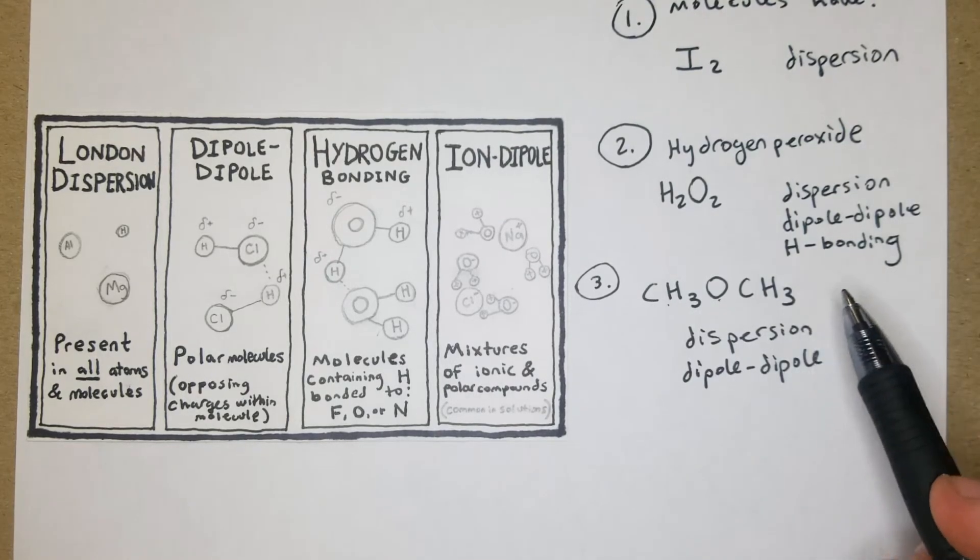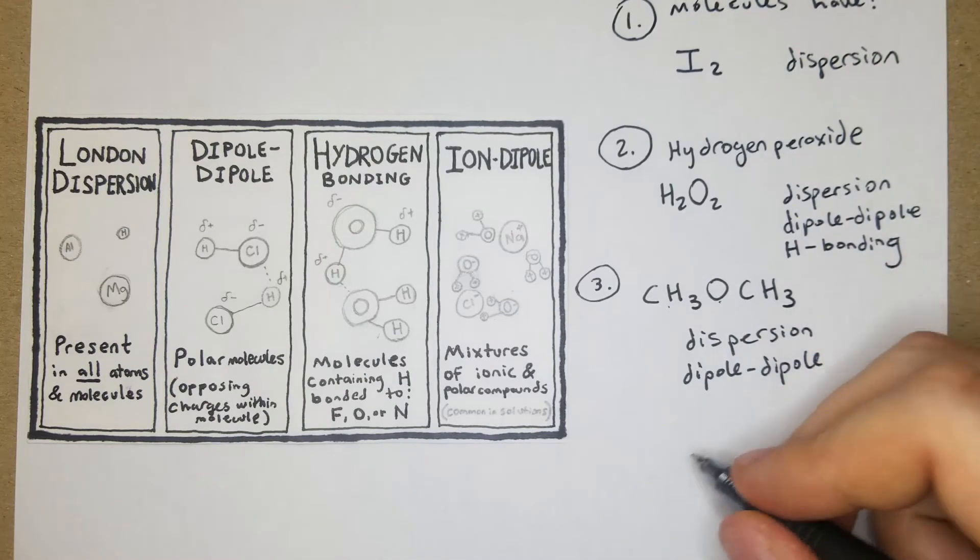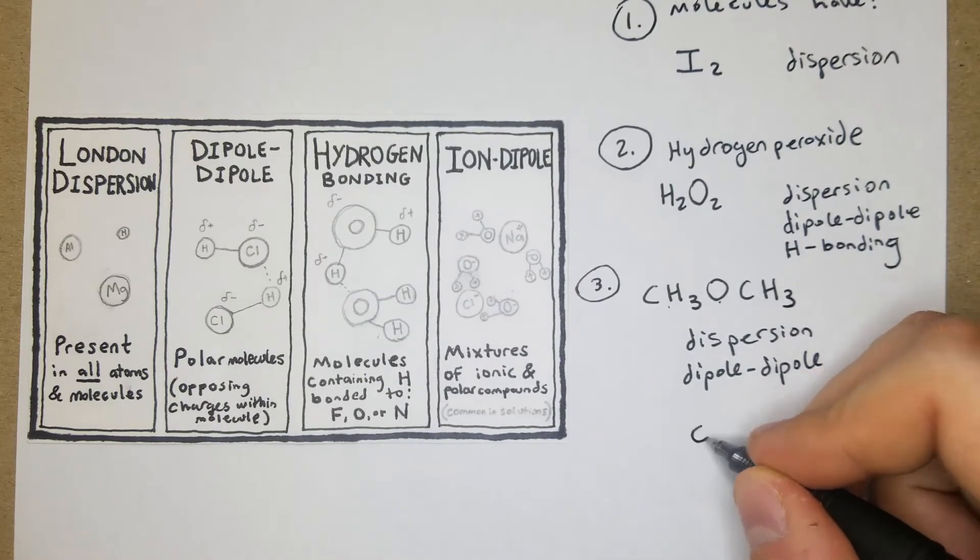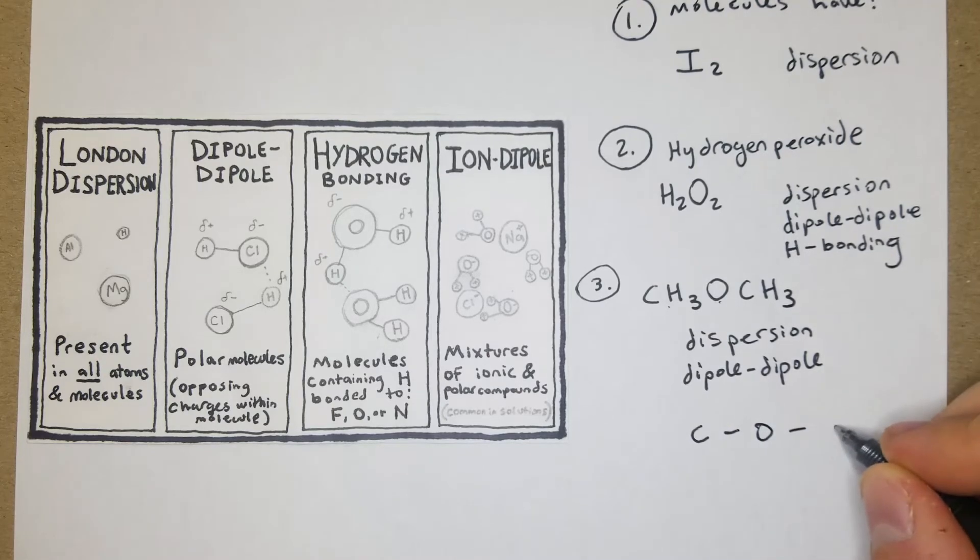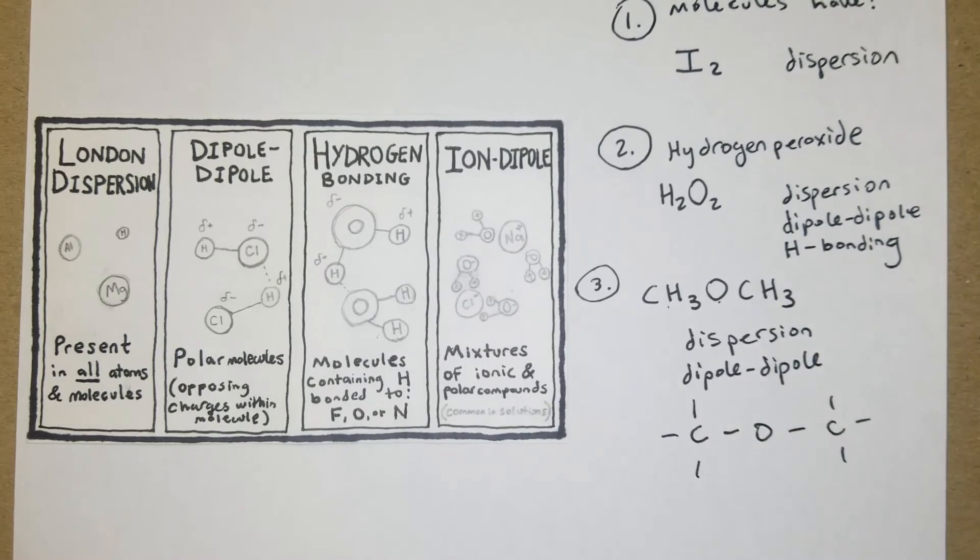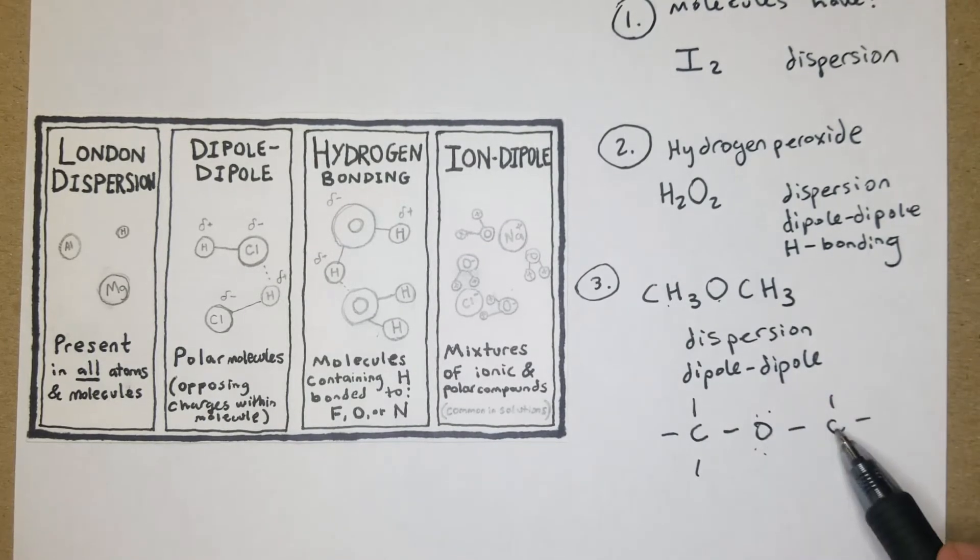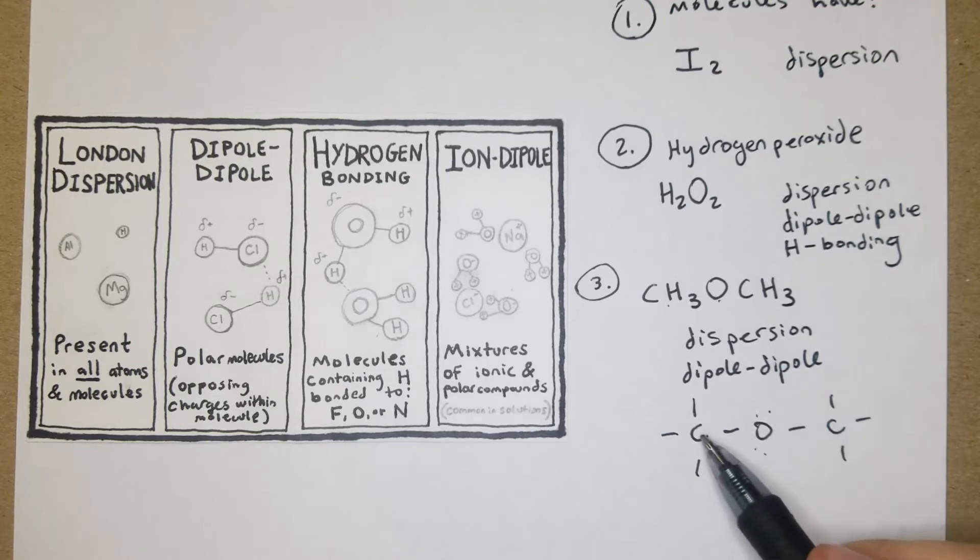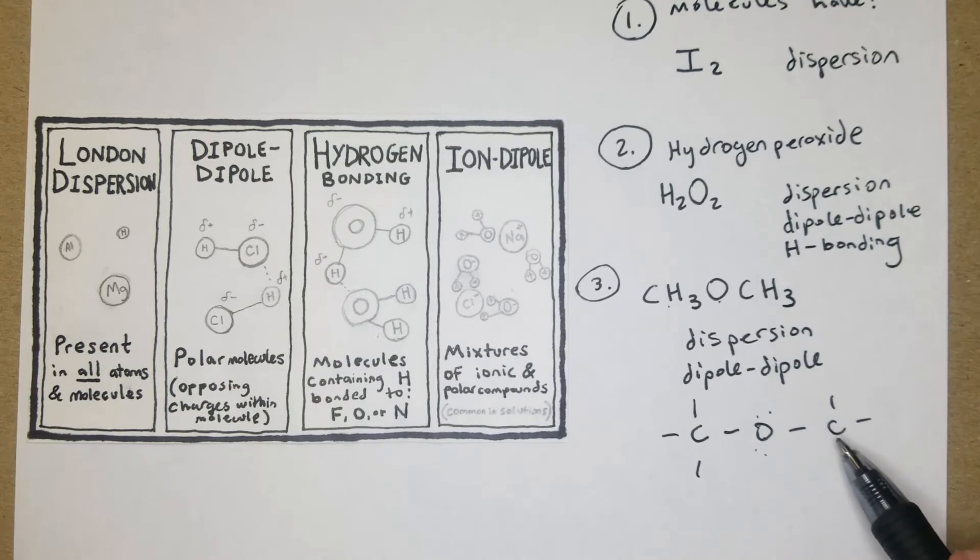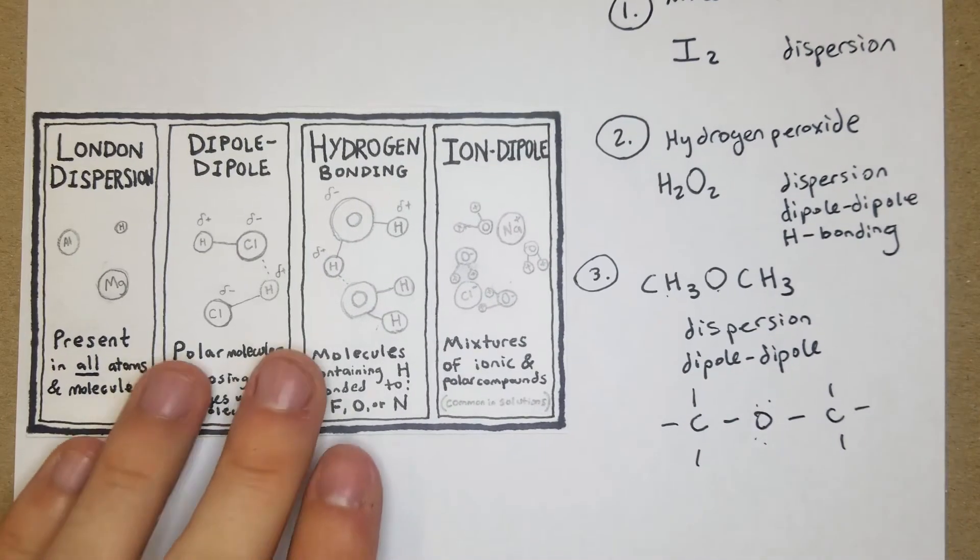What it ends up being is that each of the C's - let me see if I can draw this here - it's going to be like this. We have the O in the middle, the hydrogens are not bonded to the O, so there won't be hydrogen bonding, and then you've got the dipole-dipole.